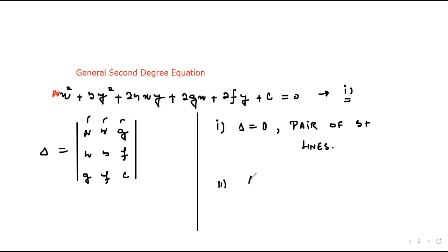Condition number two is, if the value of the determinant is non-zero, then in that case there will be condition on ab minus h square.